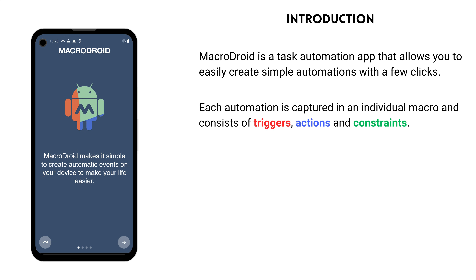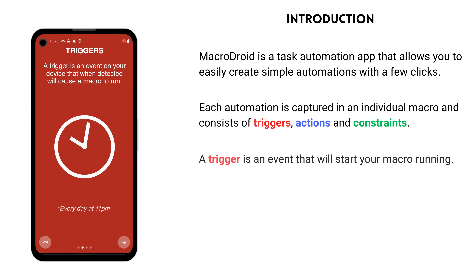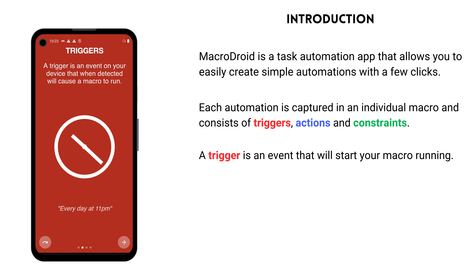Each automation is captured in an individual macro and consists of triggers, actions and constraints. A trigger is an event that can be detected that will start your macro running. For example, you can trigger a macro when the time is 11pm.